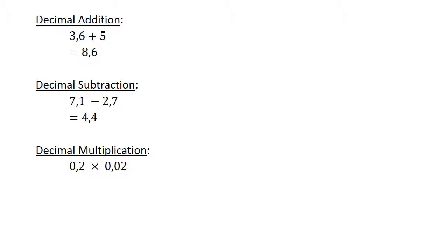Decimal addition: 3.6 plus 5 equals 8.6. Decimal subtraction: 7.1 minus 2.7 equals 4.4. Decimal multiplication: 0.2 times 0.02 equals 0.004.